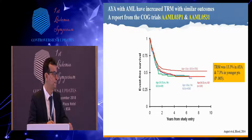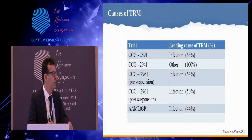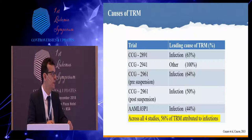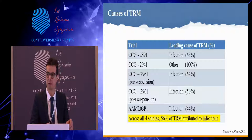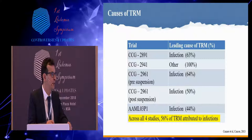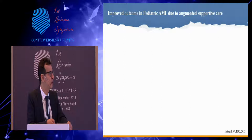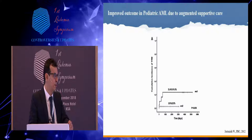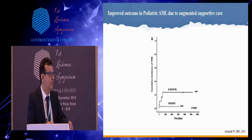What are the causes of TRM across different COG studies? It is mainly infection. Across all four studies over different decades, 56% of TRM was attributed to infections. Aggressive supportive care has been implemented in the most recent trials, showing some survival benefit. A local and national study from Jeddah through the National Guard by Dr. Wasan Jastaniyah looked at two different eras after implementing aggressive supportive care including antifungals and keeping patients admitted until recovery. In era two, TRM was much lower.